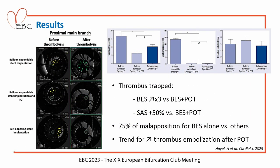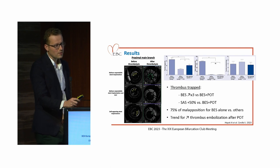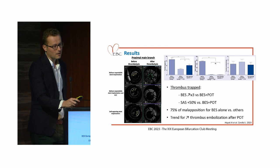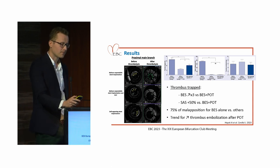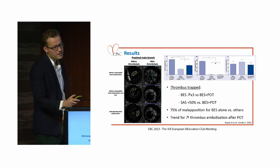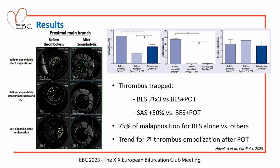When we compare the results: thrombus trapped was very high with balloon-expandable stent alone — much higher compared to the POT strategy. The self-apposing stent also demonstrated better trapping — greater than 50% more than balloon-expandable stent followed by POT. The huge thrombus trapped in balloon-expandable stent was at the cost of very large malapposition in the proximal part of the stent, according to the fractal geometry of the bifurcation. We never demonstrated a significant difference between the thrombus embolized, but just a trend toward more thrombus embolized with balloon-expandable stent followed by POT.